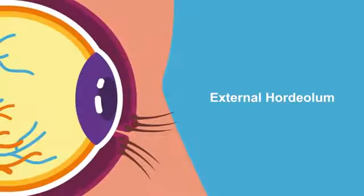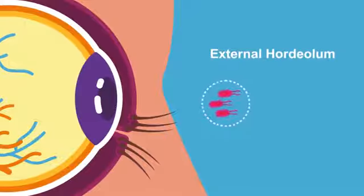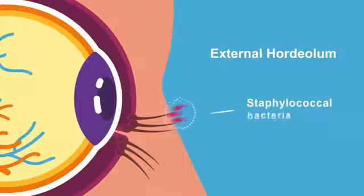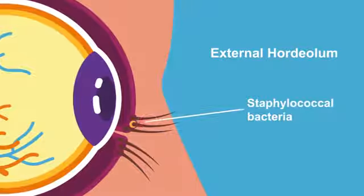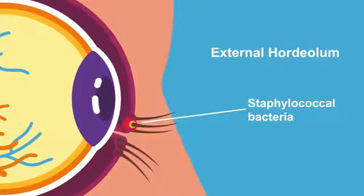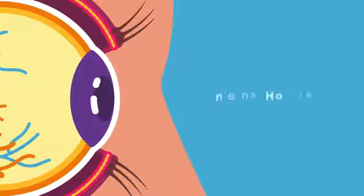Stye or external hordeolum is an acute infection, usually from staphylococcal bacteria, of the lash follicle and the associated glands of Zeiss. Same infection occurring in meibomian glands is called internal hordeolum.